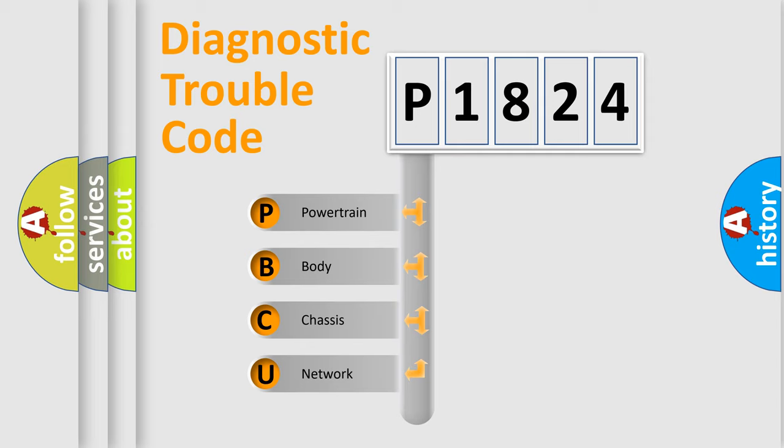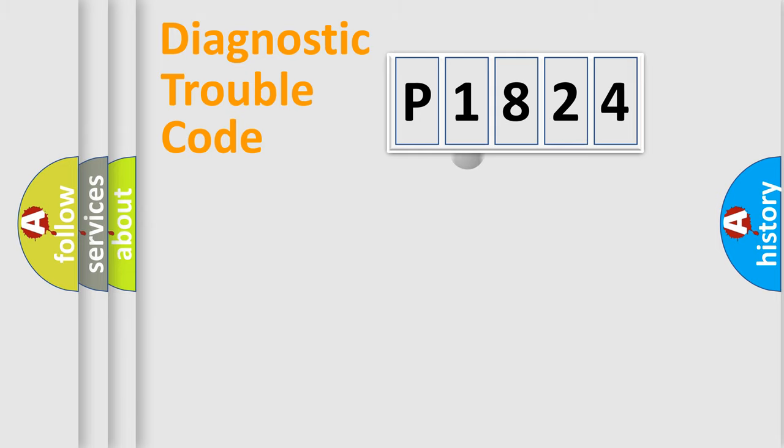We divide the electric system of automobile into four basic units: Powertrain, body, chassis, and network. This distribution is defined in the first character code.